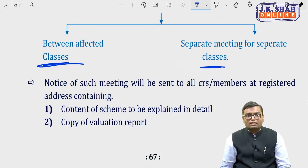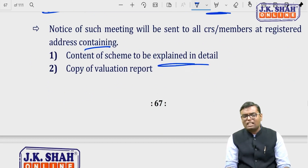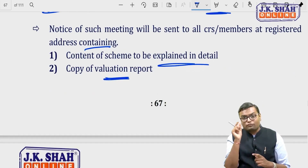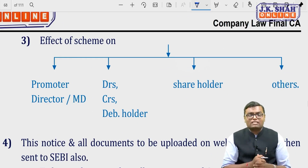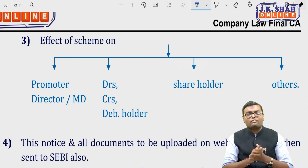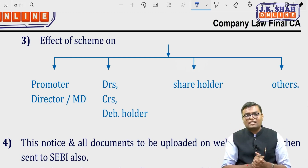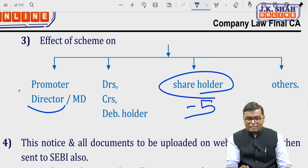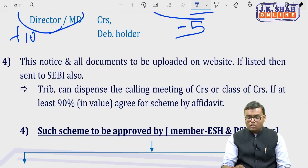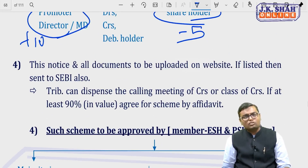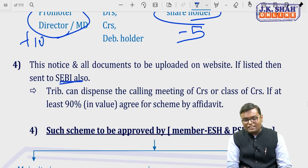Along with the notice for the meeting, you must send: the content of the scheme explained in detail, a copy of the valuation report from the registered valuer, and the effect of the scheme on promoters, directors, managing directors, creditors, debtors, debenture holders, and shareholders. These effects must be individually explained. This notice and all documents must also be uploaded on the website. If the company is listed, all these must be separately sent to SEBI as well.